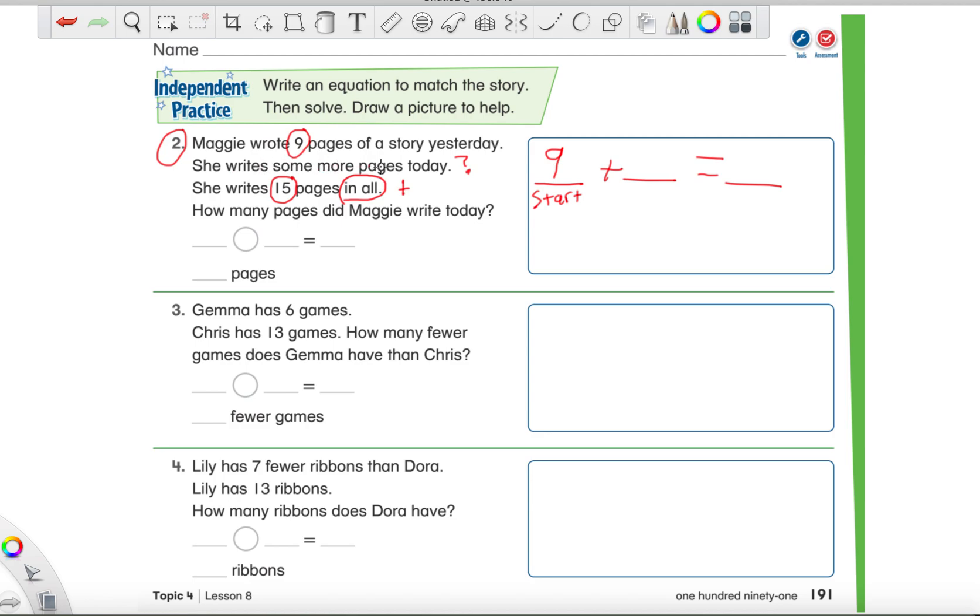Me personally, I would put this in the first space. And this is going to be our start number. If we're using a number line, it's our start number. Then we have one part because that's what she did yesterday. She writes some more pages today. So do we know the other part? No, we don't. Remember? It was a big old question mark. We have no idea. But she writes 15 pages in all. So where's that number 15 going to go?